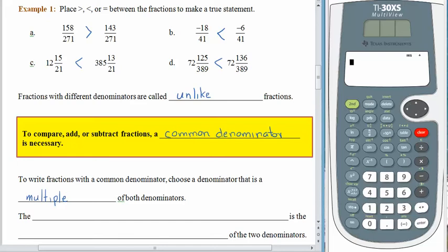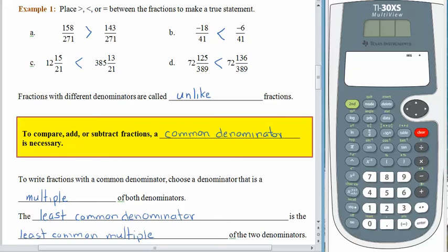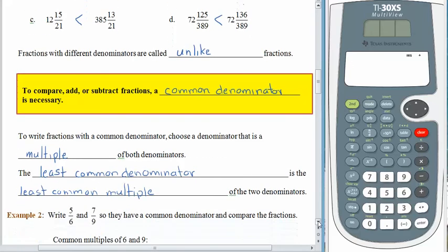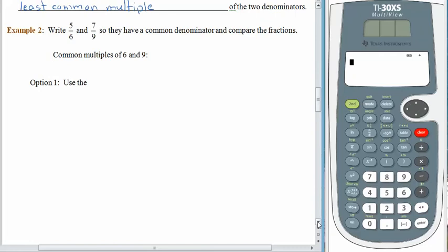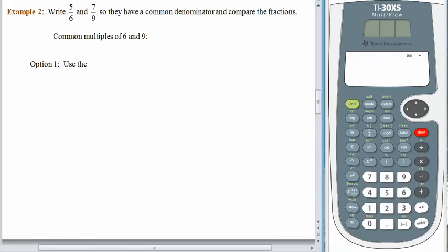There are lots of ways to do this. People often talk about the least common denominator, and a lot of times it's handy to have that one. The least common denominator is the least common multiple of the two denominators. We talked about least common multiples a little while ago, so I know you know how to find them. Let's look at example two — our job is to write 5 sixths and 7 ninths so that they have a common denominator, and then we can compare the fractions. So the first thing we're going to do is find some common multiples of 6 and 9.